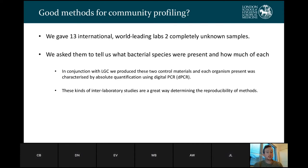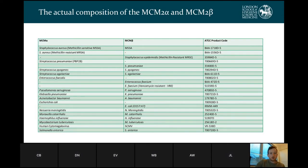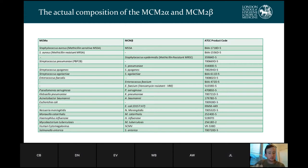These kinds of interlaboratory studies are a great way of determining reproducibility of methods. To clarify, we are looking at the reproducibility of the bioinformatic pipelines used to analyse these samples. The two samples, called MCM-alpha and MCM-beta, have quite complex compositions with quite a few different species in them, a little bit of difference between the two but a lot of shared species. The labs did not know what was in these samples.